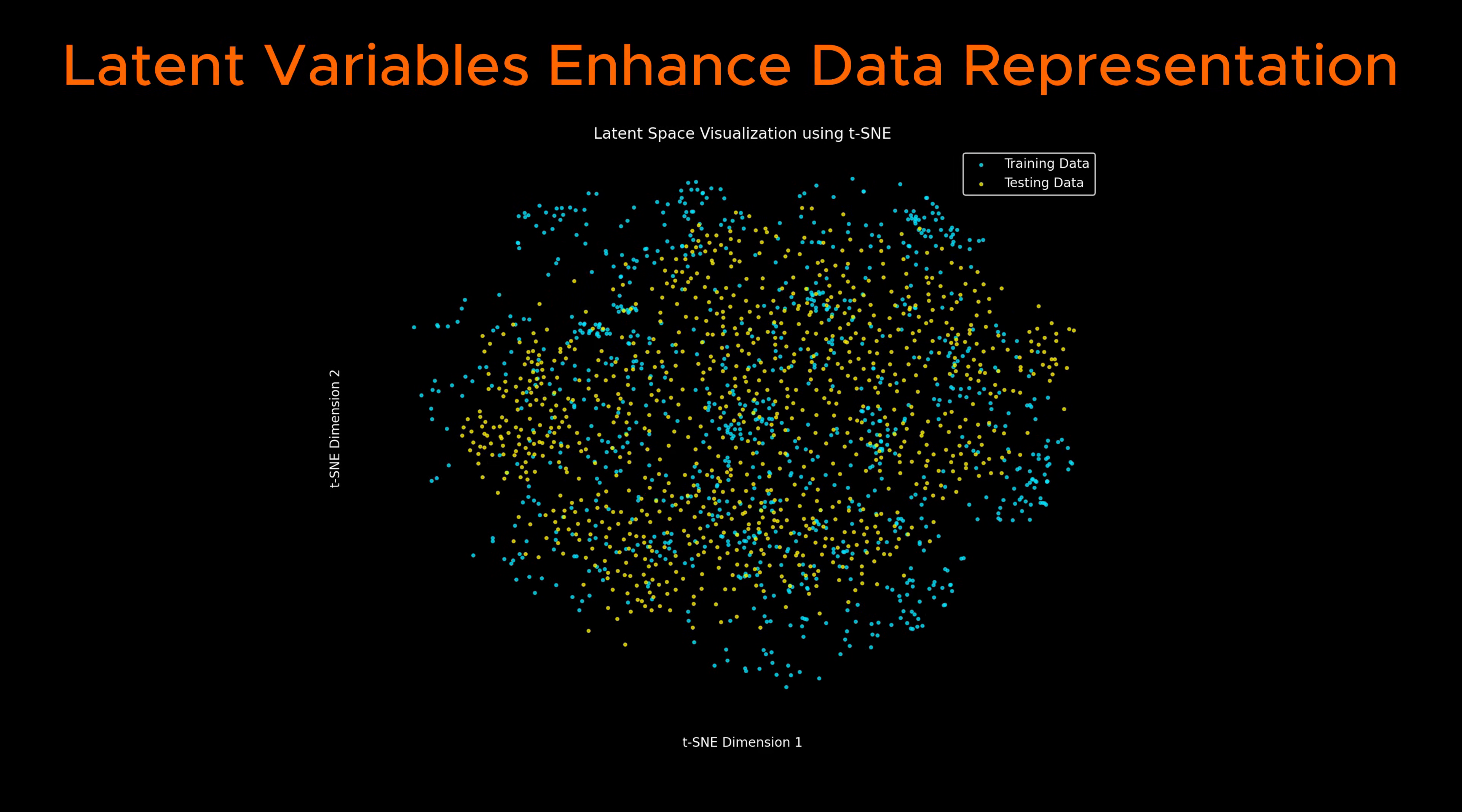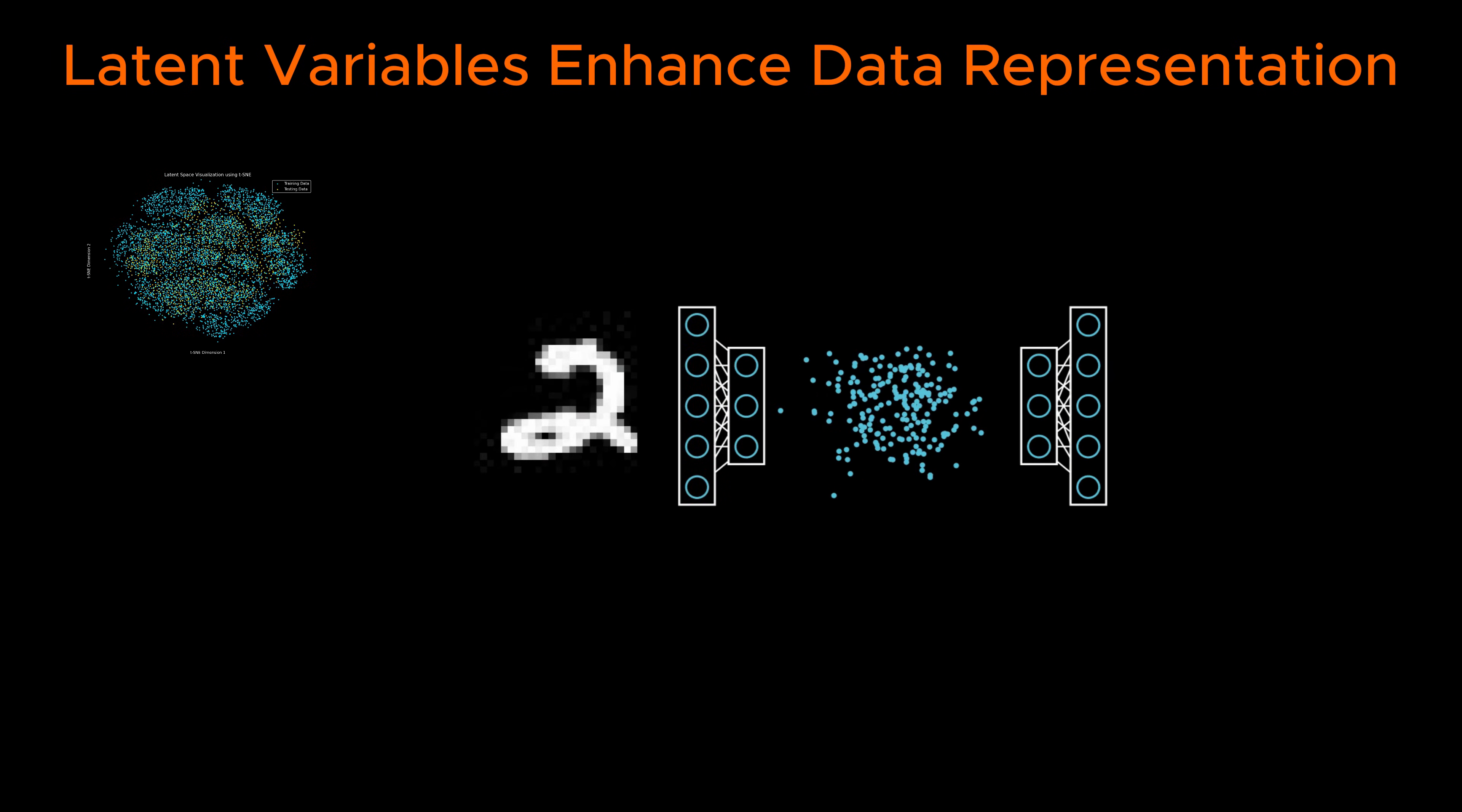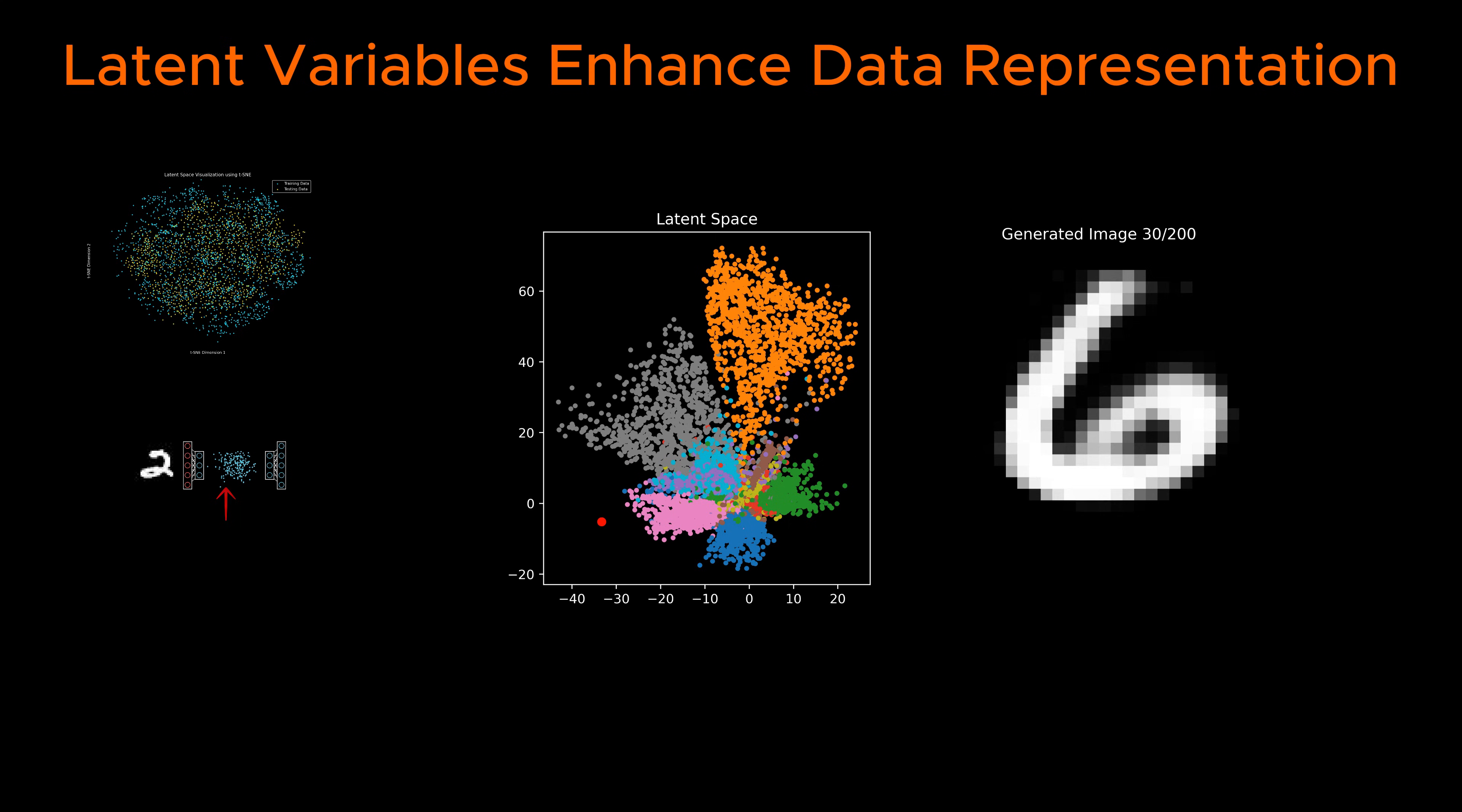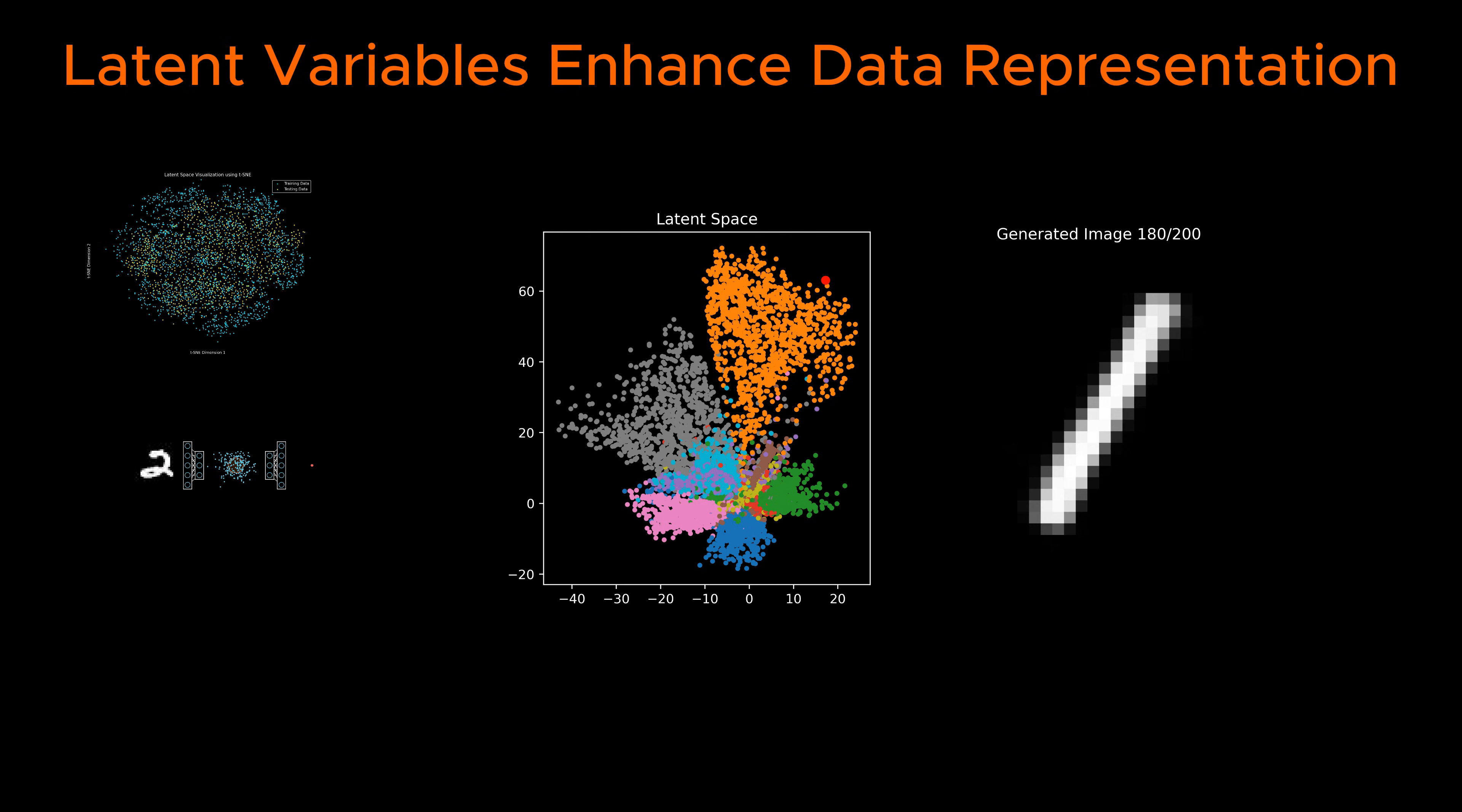Let's start by seeing how autoencoders use the latent space to learn efficient representations of data. Autoencoders are neural networks whose layers have a specific design aiming to compress input data into a lower-dimensional form and then reconstruct it as accurately as possible. The key to this process is the latent space, also known as the bottleneck, which serves as a compressed representation of the original input. This latent space captures essential features while discarding unnecessary details, making it a fundamental component of autoencoder models.